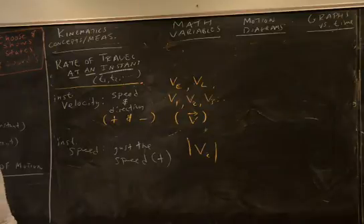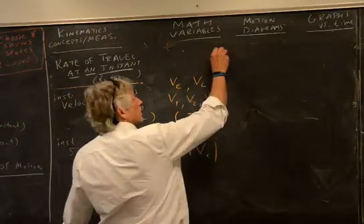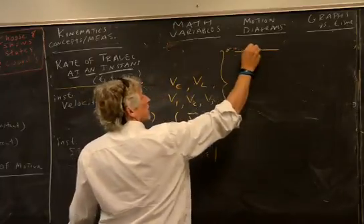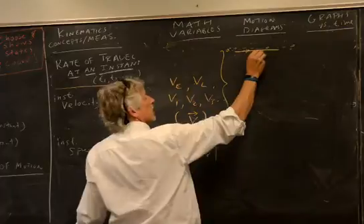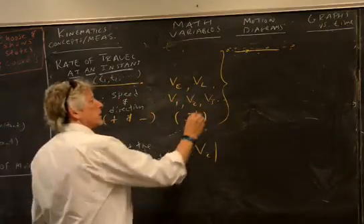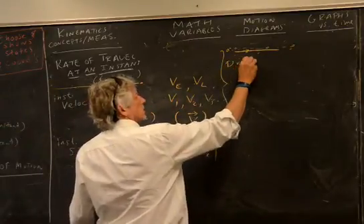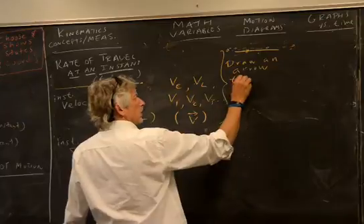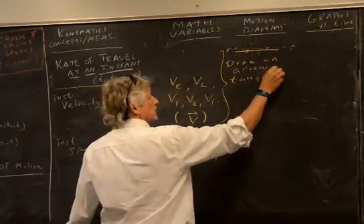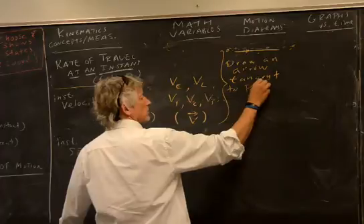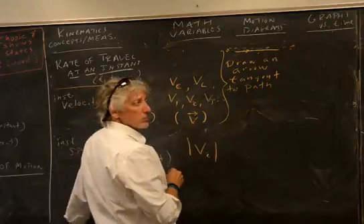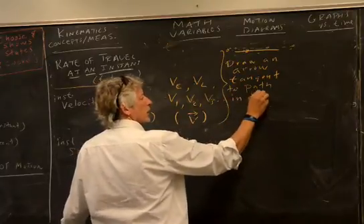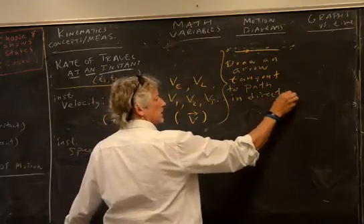So how do I show that on a motion diagram? In one dimension, I start here and move along the path. You draw an arrow tangent to the path at that instant, in the direction of motion.